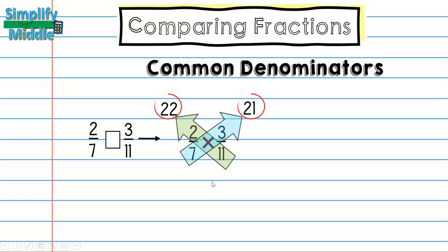What I've really done here is I've said 2 sevenths times 11 on the top and 11 on the bottom, so this is really 22 seventy-sevenths. That simplifies to 2 sevenths, so I haven't changed the fraction. On this side, 3 elevenths, I've really multiplied both the top and the bottom by 7, and I get 21 seventy-sevenths.